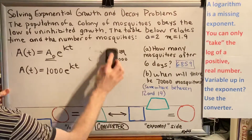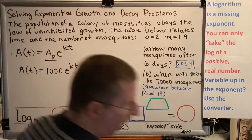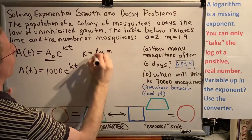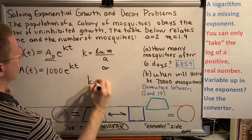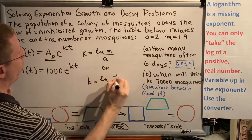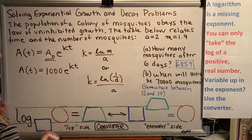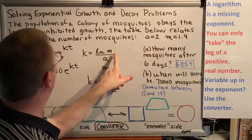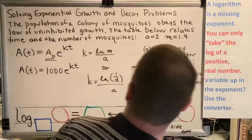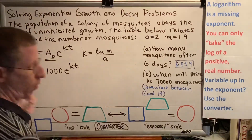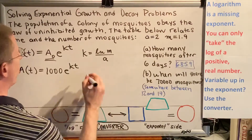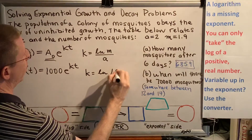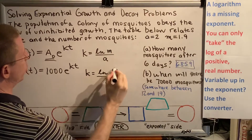The next thing is k. There are two equations for k, and we have to pick the correct one. k is equal to the natural log of M over A, or k is equal to the natural log of 1 over D, all divided by A. In this particular problem, we're dealing with growth, which means we have an A and an M, so we're going to use the top equation. k equals the natural log of M, which is 1.9, all divided by A, which is 2.